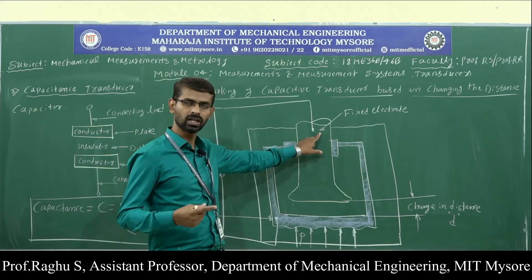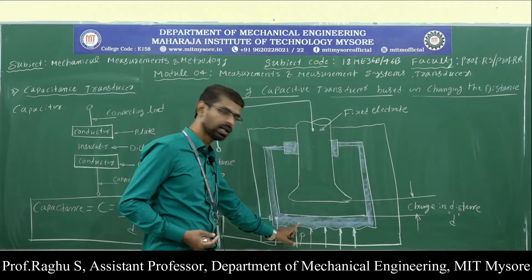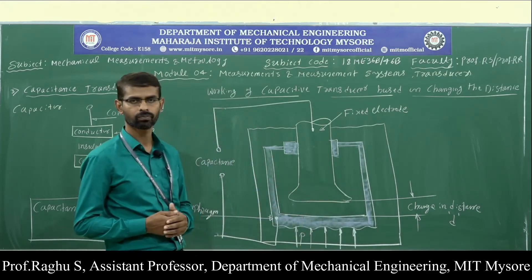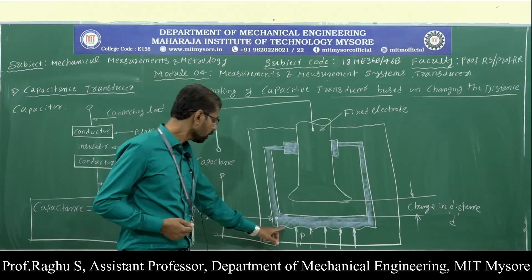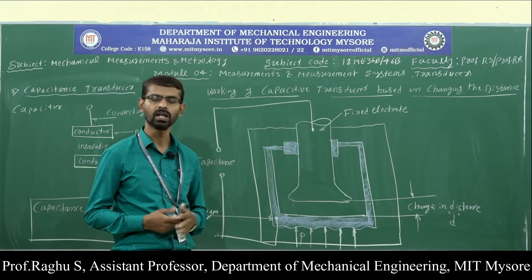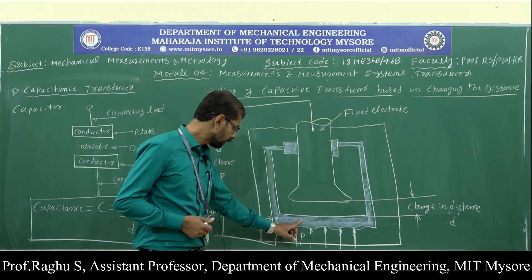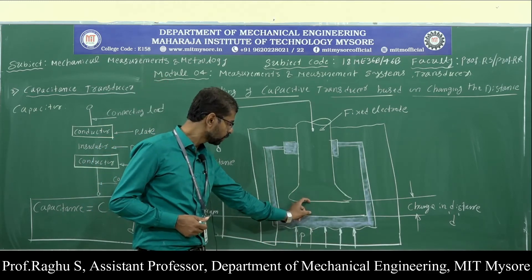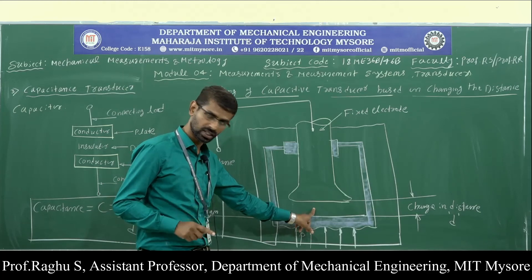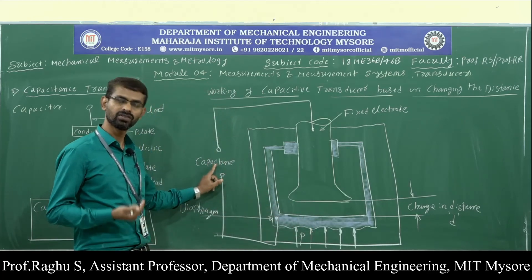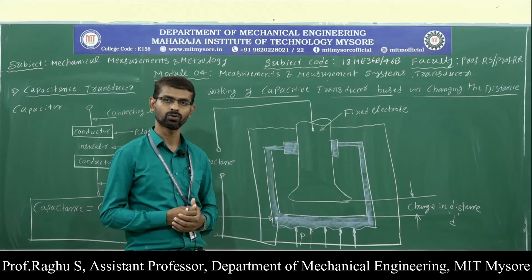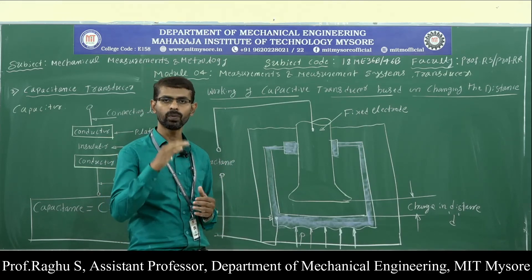In the capacitive transducer, a fixed electrode acts as one plate and a diaphragm acts as the other plate, separated by a small distance d. The pressure to be measured is applied onto the diaphragm. Since the diaphragm is a flexible material, it undergoes deflection. When the diaphragm deflects, the distance between the fixed electrode and diaphragm changes. When the distance decreases, capacitance increases. The change in capacitance can be measured and taken as the measurement of pressure.